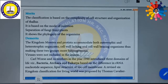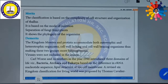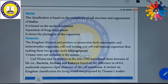Some merits and demerits are also there with Whittaker's five kingdom classification. The merits: the five kingdom classification is based on the complexity of cell structure and organization of thallus. It is also based on mode of nutrition. This classification separates fungi from plants because they cannot synthesize their own food — they are heterotrophic. It also shows the phylogeny of living organisms.